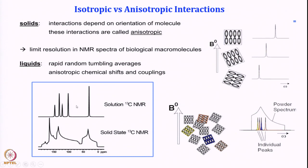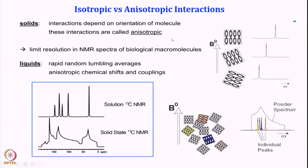In liquid, rapid random tumbling averages the chemical shift — anisotropic chemical shifts and couplings are averaged out, giving a sharp line. In solid, the anisotropic interactions remain — they introduce various terms that cause broad lines, limiting the spectral resolution for biological macromolecules.